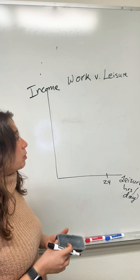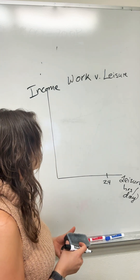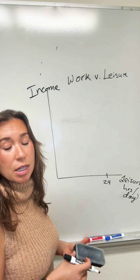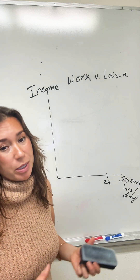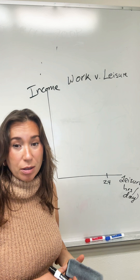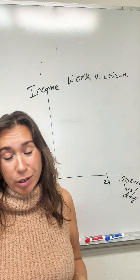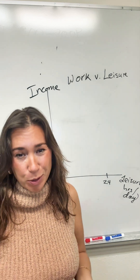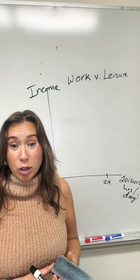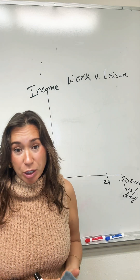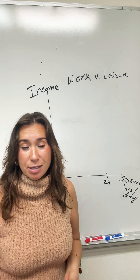For income, we take the wage rate times 24 hours in a day, because at most we can spend up to 24 hours in a day working, although most of us wouldn't choose to do that. So the first tool we need in our toolbox is called a budget constraint — we'll build that next.